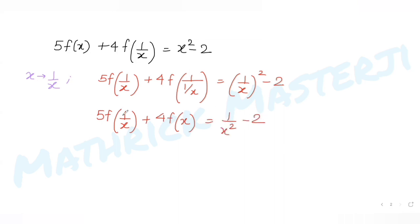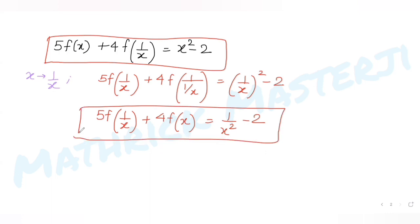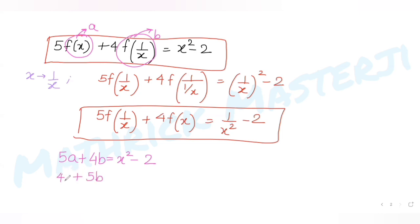Now I have two equations. Let me substitute f(x) = a and f(1/x) = b. The first equation becomes 5a + 4b = x² − 2, and the second equation becomes 5b + 4a = 1/x² − 2. I'll solve these simultaneously by eliminating b.